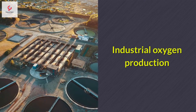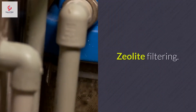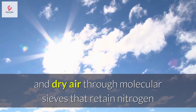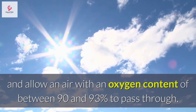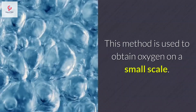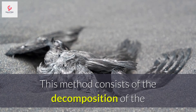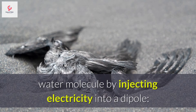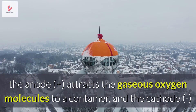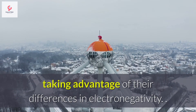Industrial oxygen production. The industrial production of oxygen occurs mainly through two methods. Zeolite filtering: it consists of passing a jet of clean and dry air through molecular sieves that retain nitrogen and allow air with an oxygen content of between 90 and 93% to pass through. This method is used to obtain oxygen on a small scale. Electrolysis of water: this method consists of the decomposition of the water molecule by injecting electricity into a dipole. The anode attracts the gaseous oxygen molecules to a container, and the cathode attracts the hydrogen molecules, taking advantage of their differences in electronegativity.